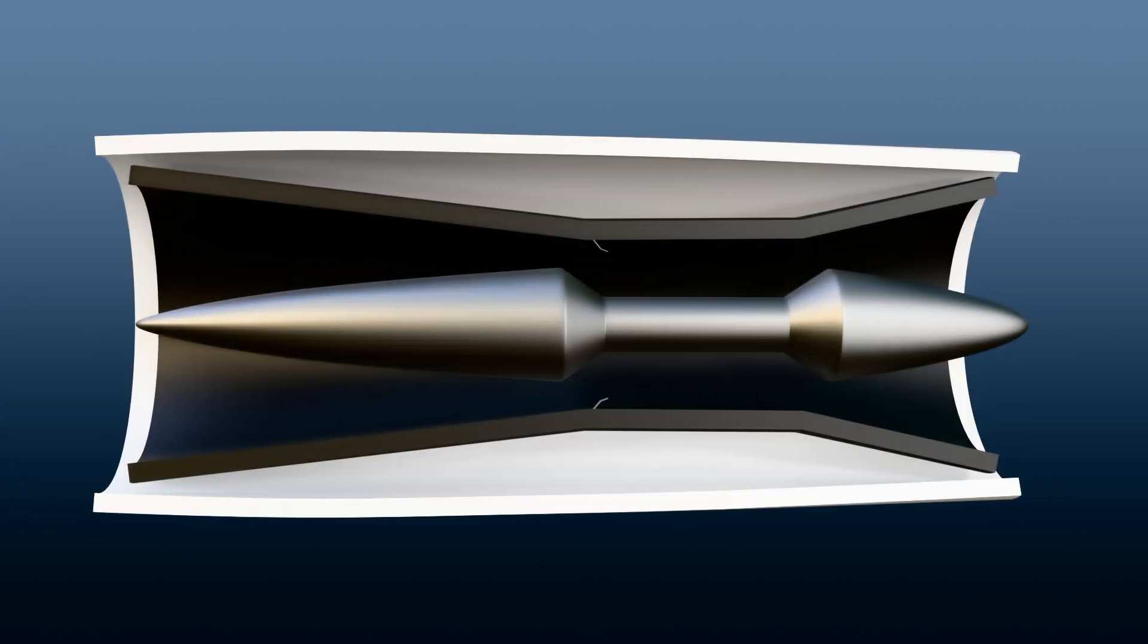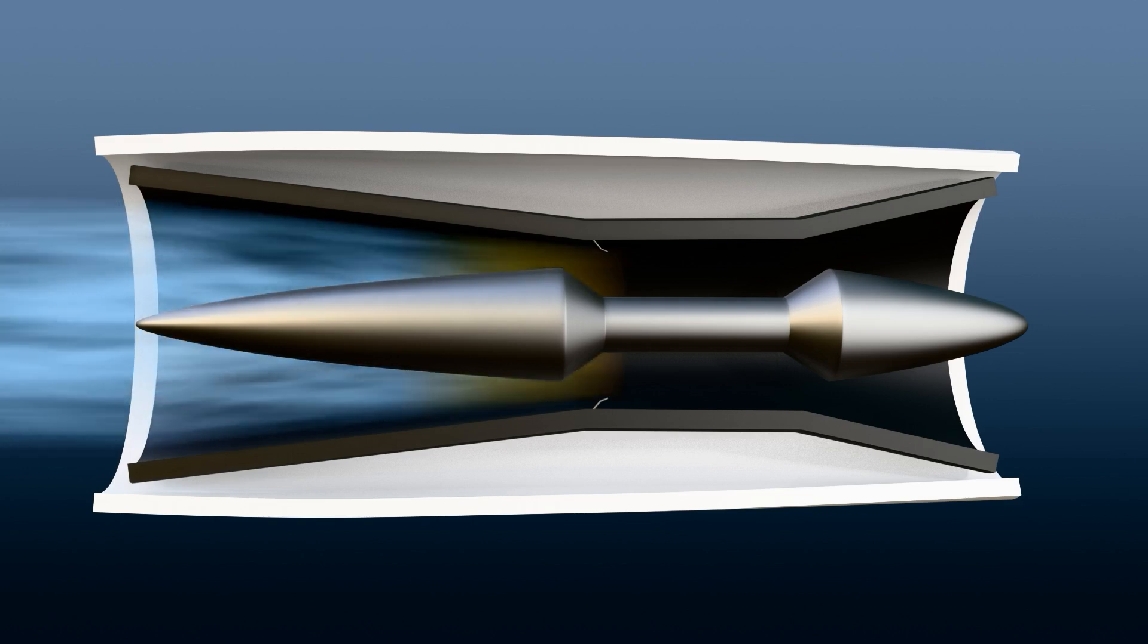Scramjet engines are an advanced version of ramjet technology, designed to work at very high speeds, known as hypersonic speeds. Like ramjets, scramjets have an inlet, combustion chamber, and nozzle. But they possess a unique capability to ignite fuel while maintaining supersonic airflow. As an aircraft flies quickly, scramjet's inlet captures air and slows it down while ensuring it stays supersonic.